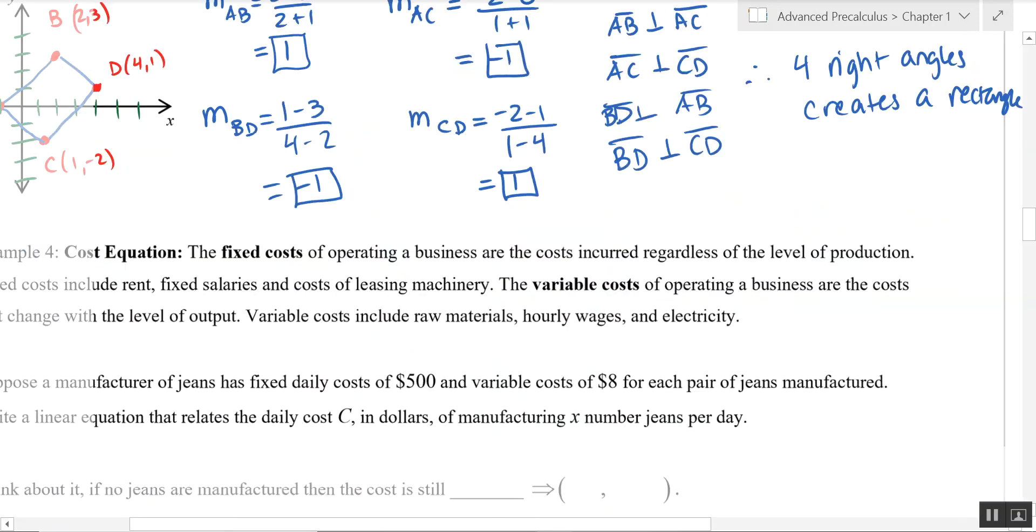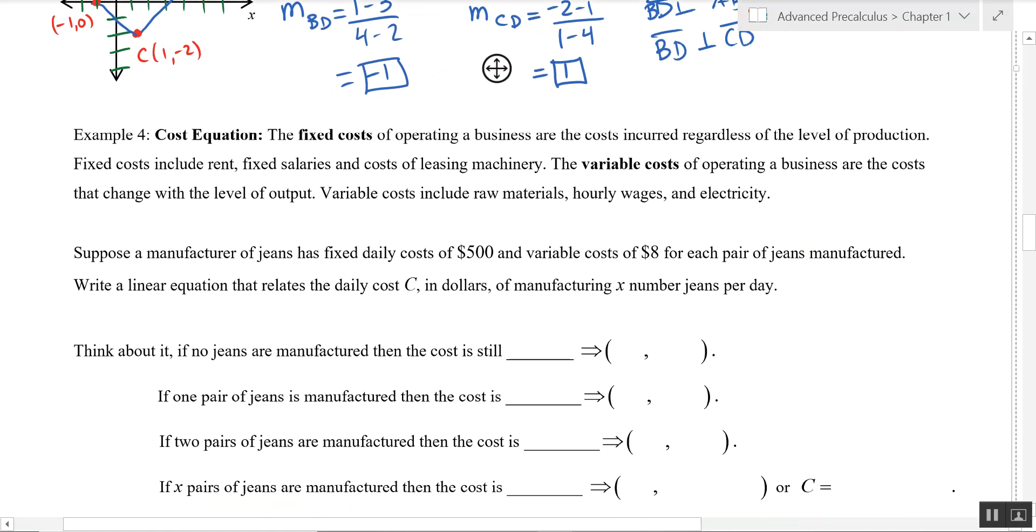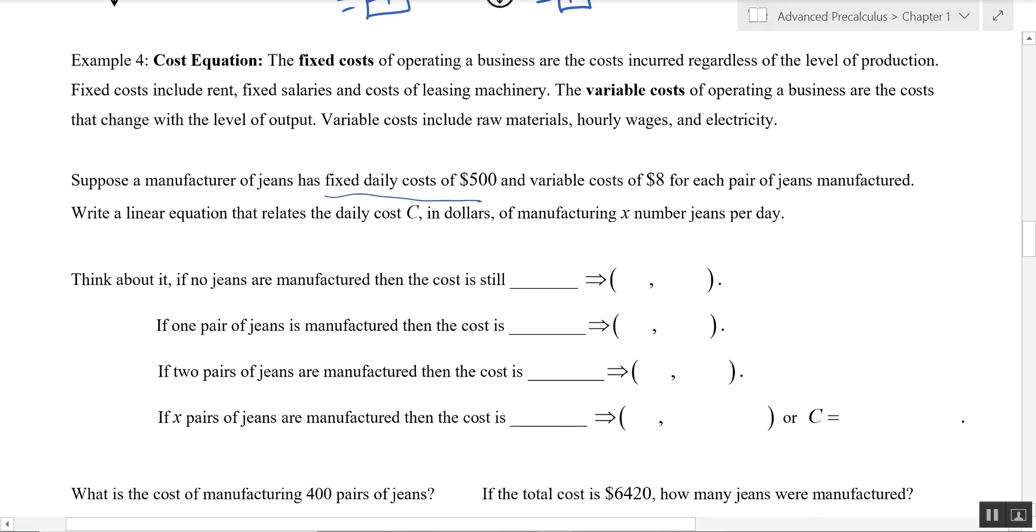Alright, last example. We've got a business that has some fixed costs and some variable costs. It looks like we're manufacturing jeans. We have a fixed daily cost of $500 and a variable cost of $8 for each pair of jeans. So we're going to write a linear equation that relates daily costs in dollars of manufacturing X number of jeans. So if no jeans are manufactured, we still have a cost that's fixed of $500. So zero jeans are manufactured, we still spend $500.